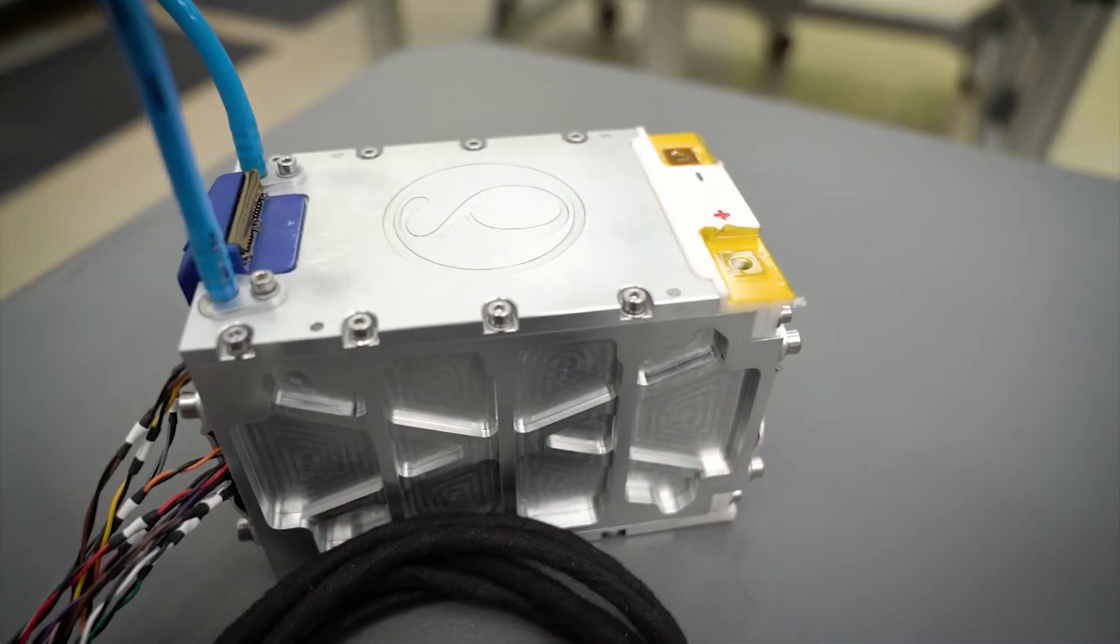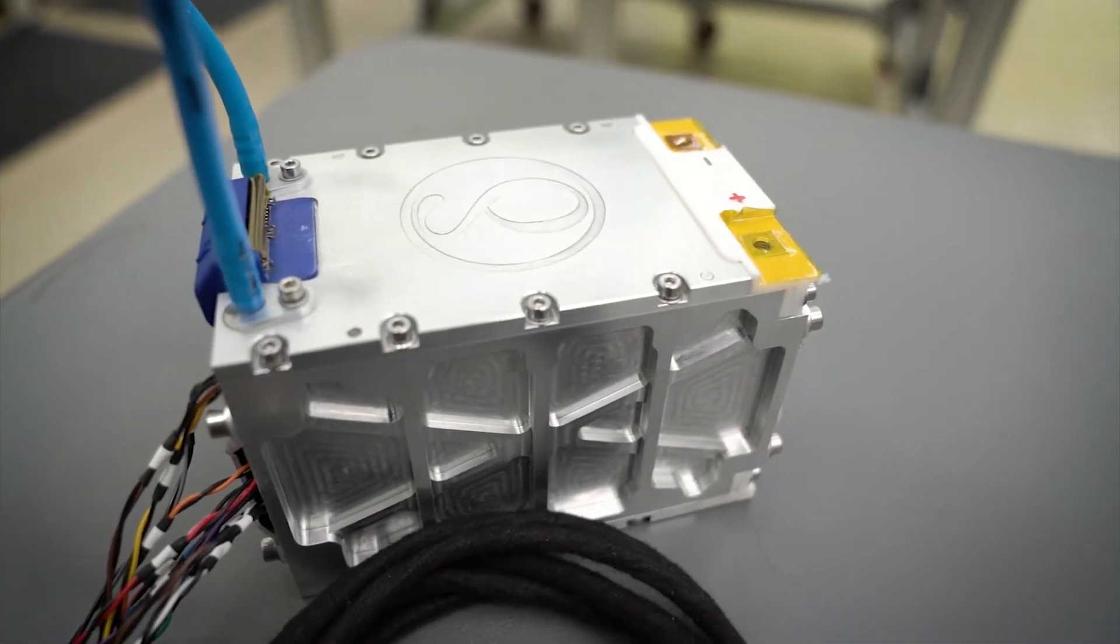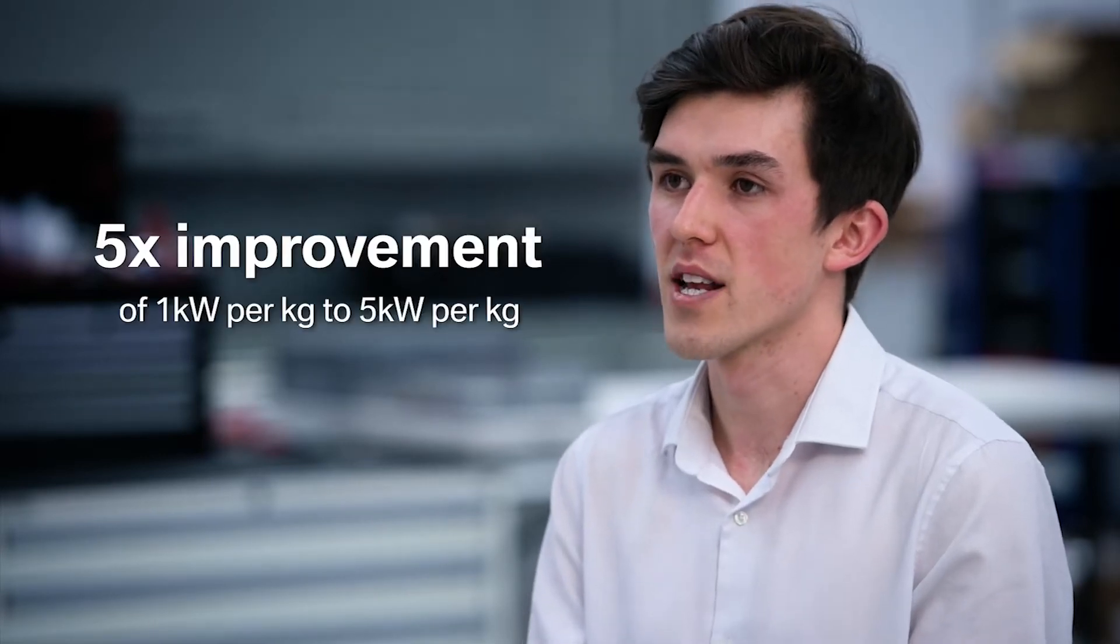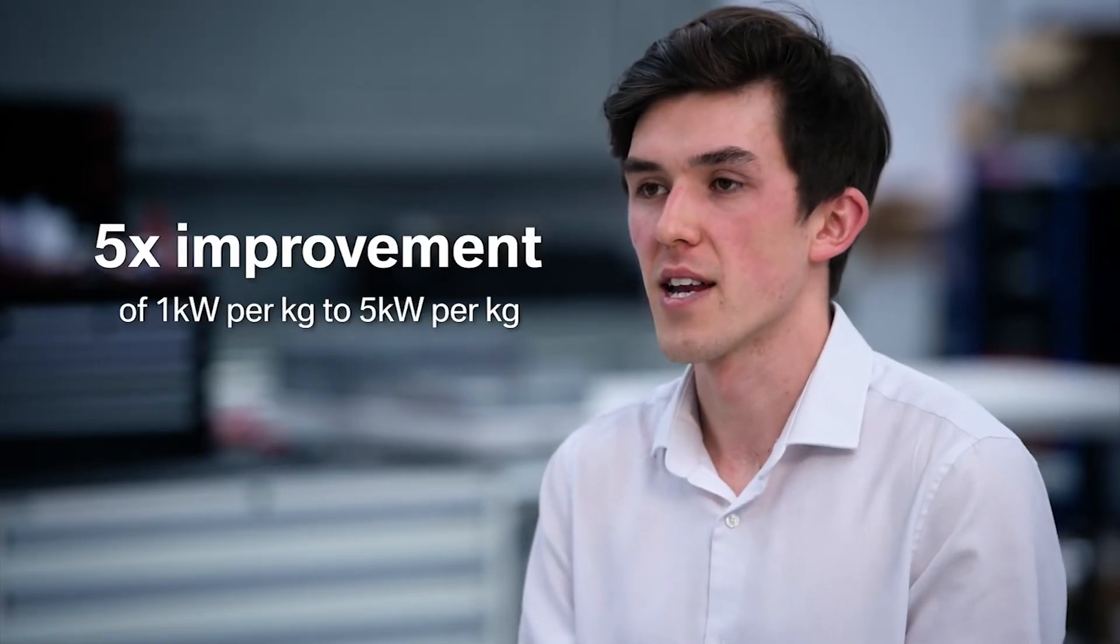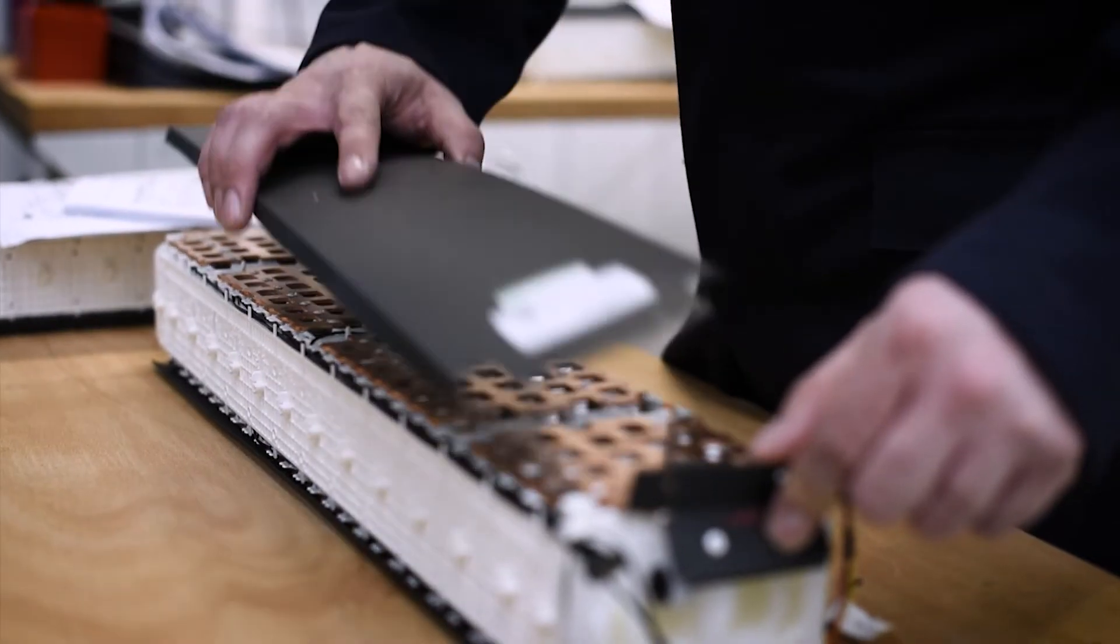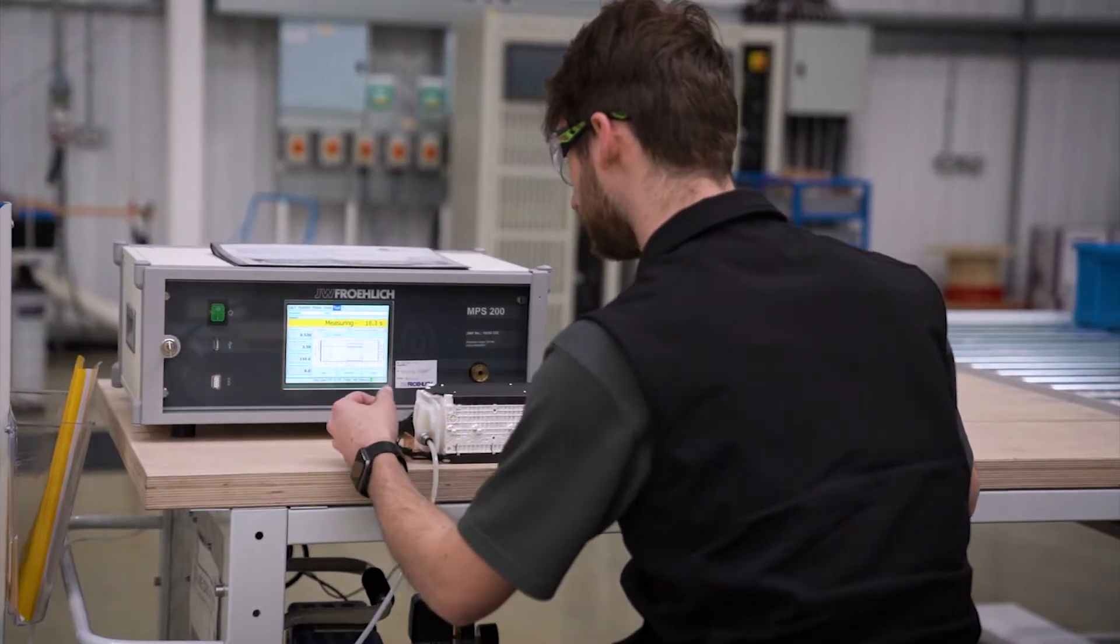One of the project goals was power density and we've achieved an improvement of five times from one kilowatt per kilogram up to five kilowatts per kilogram for the latest module. The impact from APC6 for Delta has been really crucial in us winning other commercial work so all of the learning that we've generated within the project is going to feed into that work.